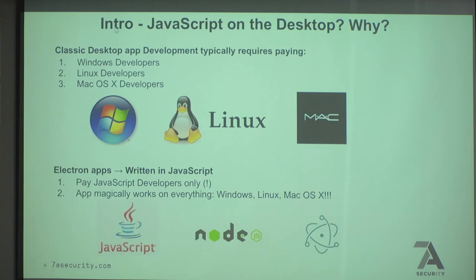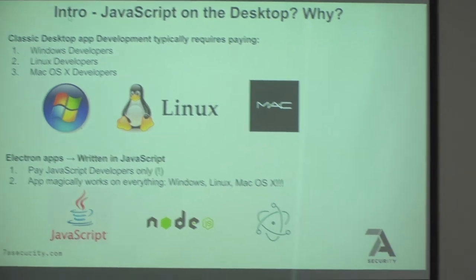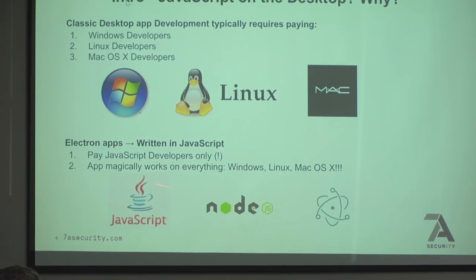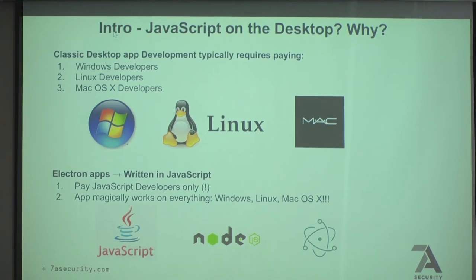Why would you run JavaScript on the desktop? It's practical for companies. Traditionally you'd have to pay Windows developers, Linux developers, and Mac developers - expensive, with coordination overhead and different deadlines. With Electron, the application is written in JavaScript and magically works everywhere. You only need to pay JavaScript developers, who are probably cheaper than Windows or Mac developers, and the application works on Windows, Mac, and Linux. That's the main reason lots of companies are doing this.